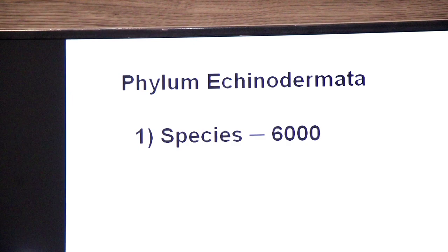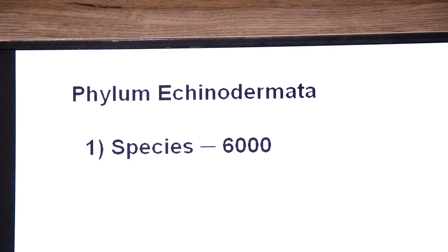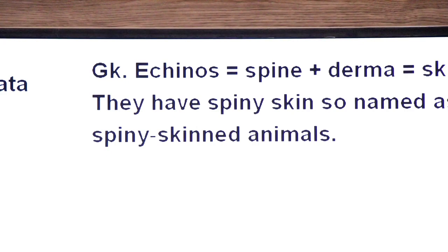According to our textbook of biology, Sindh Textbook Board Jamshoro, phylum Echinodermata includes 6,000 species. Now we will break the term Echinodermata.